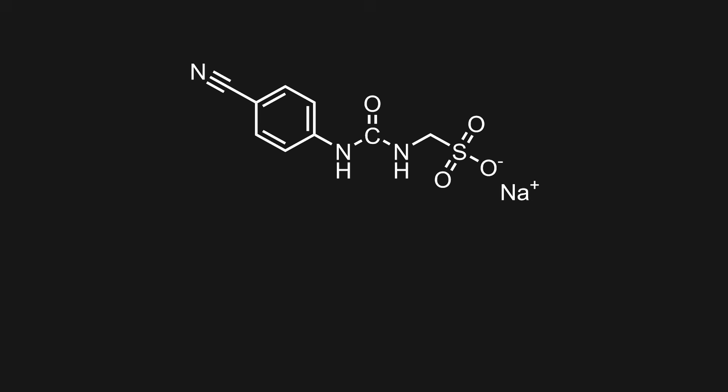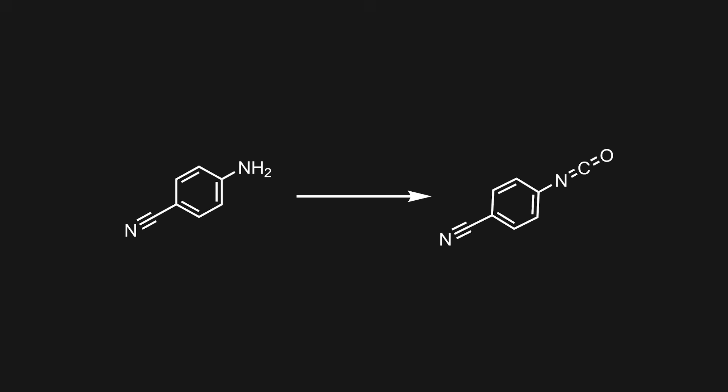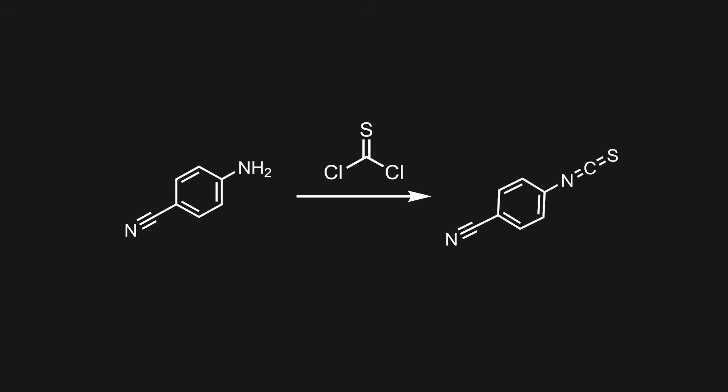Looking further into it, it seems this blocker is based on the sweetener sucralose, modified to instead cause antagonizing effects. The synthesis is relatively achievable, but it starts from this isocyanate molecule, made from the same amine I already have that I used for the lactamate synthesis. In that synthesis, I converted it to an isothiocyanate — the sulfur analog — with thiophosgene.